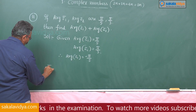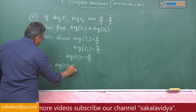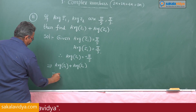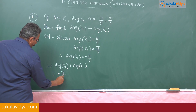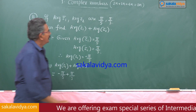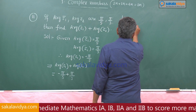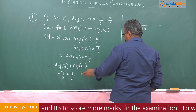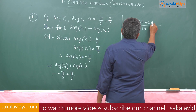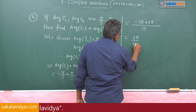So argument of z₁ is minus pi by 5. Therefore arg(z₁) plus arg(z₂) equals minus pi by 5 plus pi by 3. Taking LCM as 15: that gives minus 3pi plus 5pi over 15, which equals 2pi by 15. So the required answer is 2pi by 15.